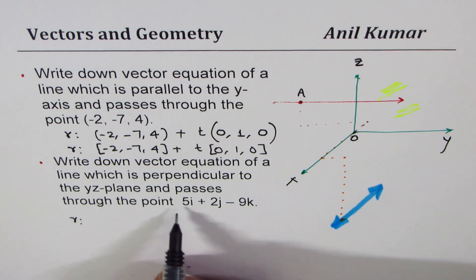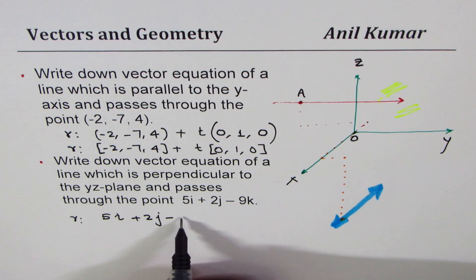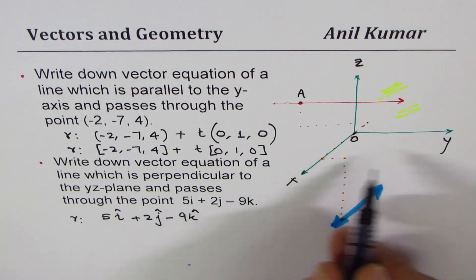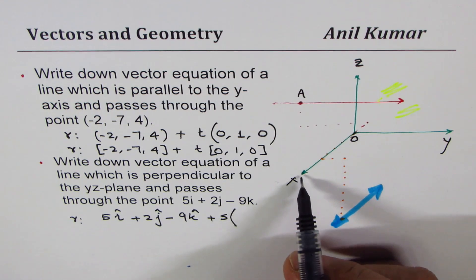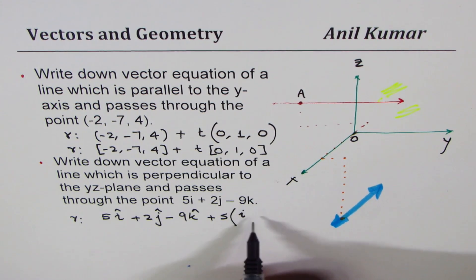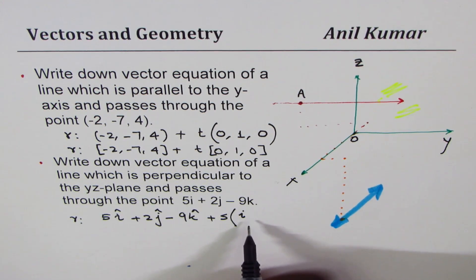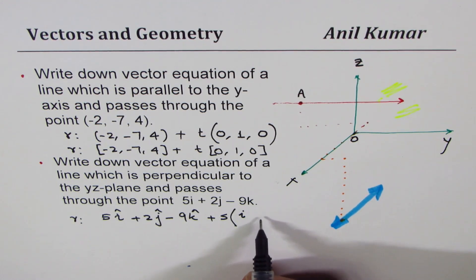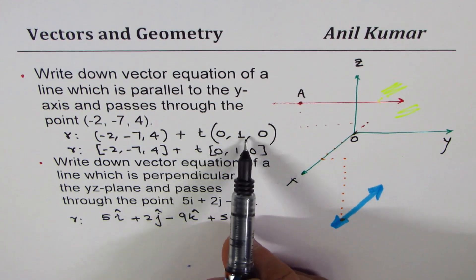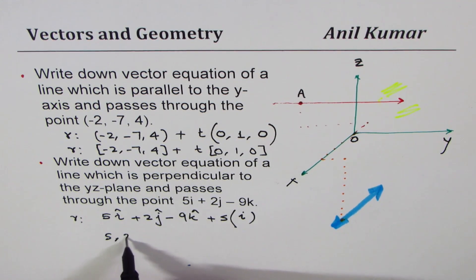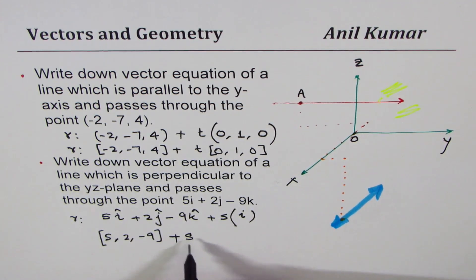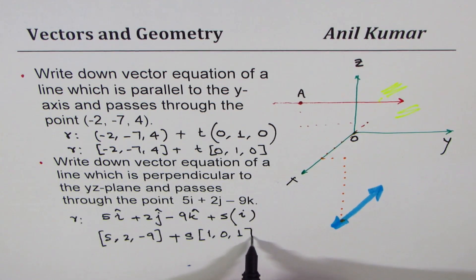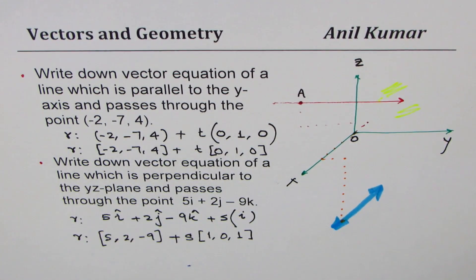Since you are moving along x, the equation will be written as 5i + 2j - 9k — these are unit vectors along x, y, z — plus s times the direction along which we are moving, which is along the x-axis, so we write just i, or (1, 0, 0). You could also write this as (5, 2, -9) + s(1, 0, 0). Since my videos are watched in different places with different nomenclatures, I'm giving answers in different forms — but all these are vector equations. I hope that helps, thank you and all the best.